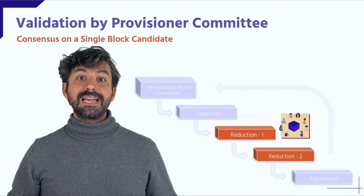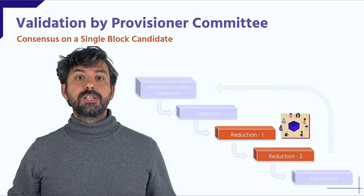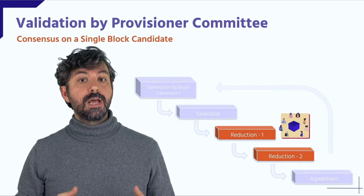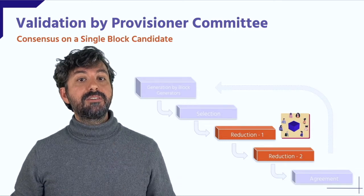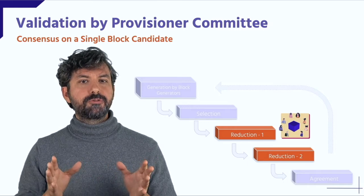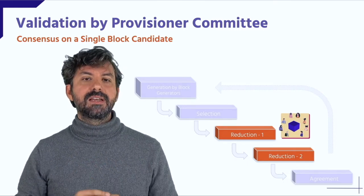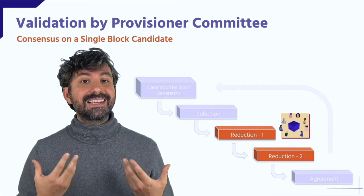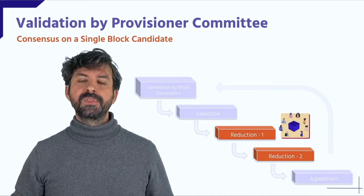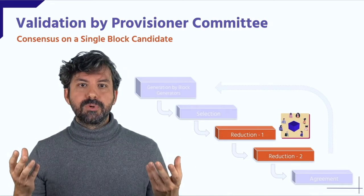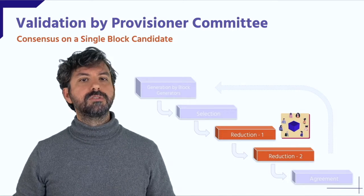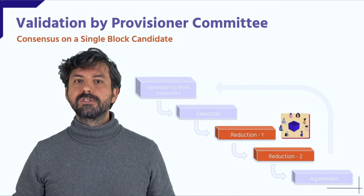The second reduction step is in essence the same as the first. The committee of the second reduction collects the ID elected during the first one and checks if it is again propagated by 75% of the committee members. Splitting the reduction phase into two different steps like this allows us to drastically reduce the amount of committee members needed while keeping the same level of security. Instead of thousands of members, we have created a secure mechanism that needs only 64 committee members to be exact.